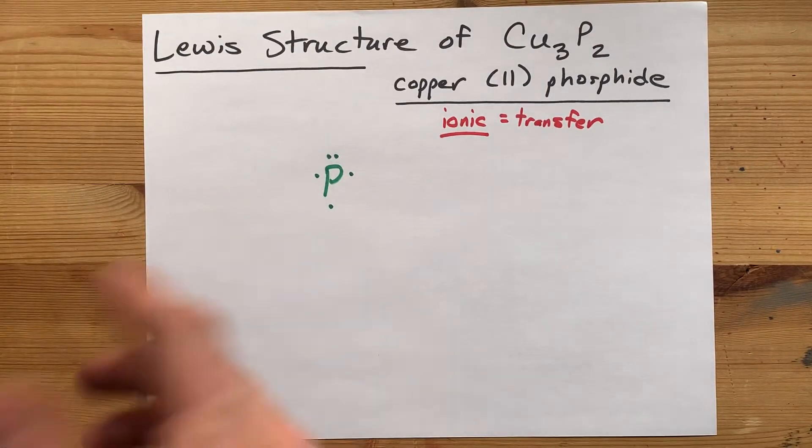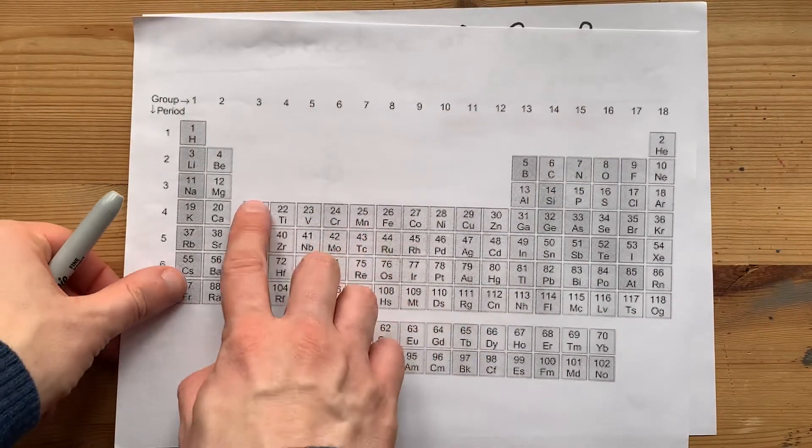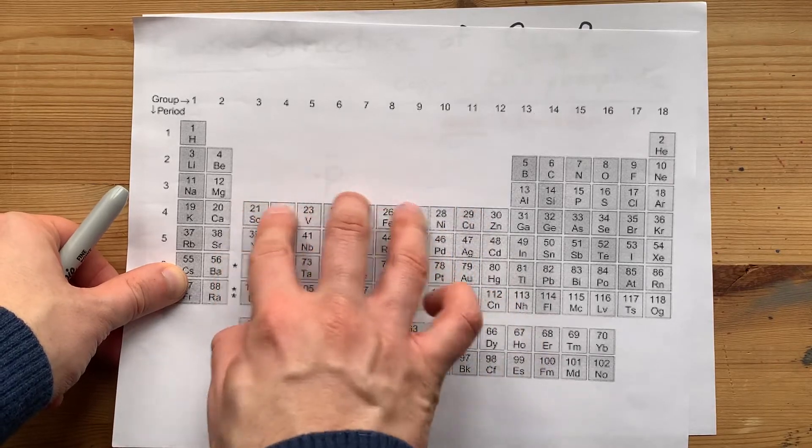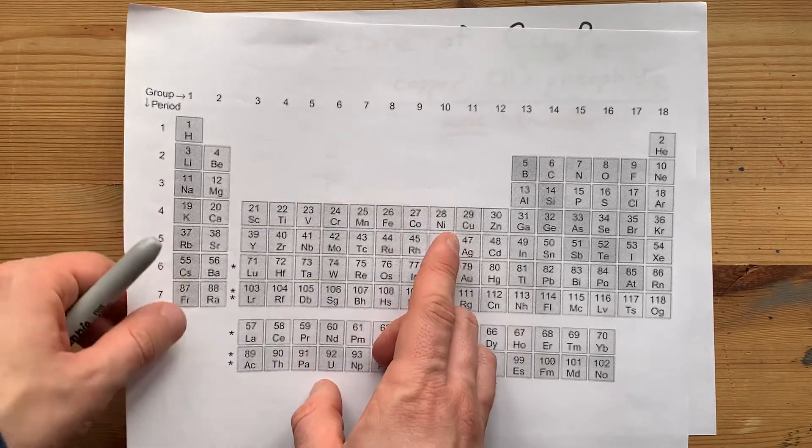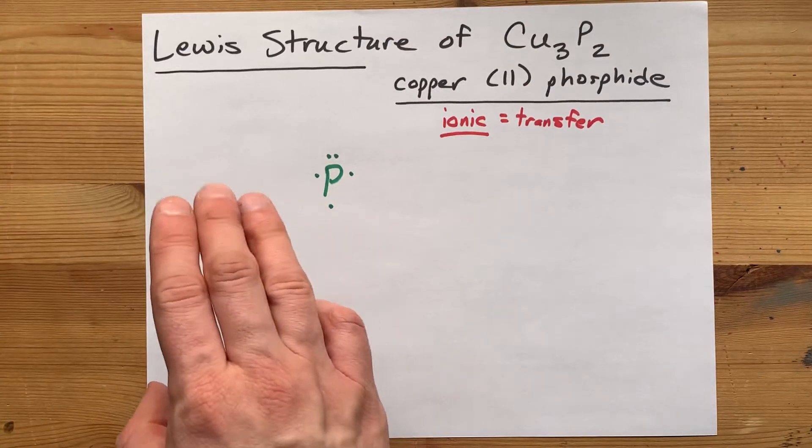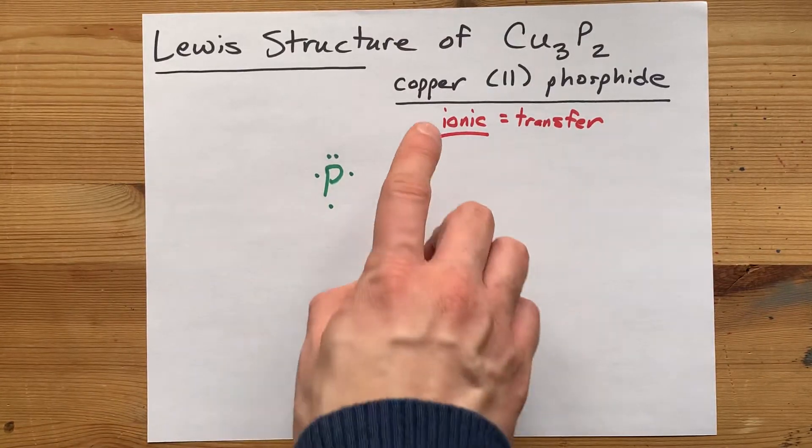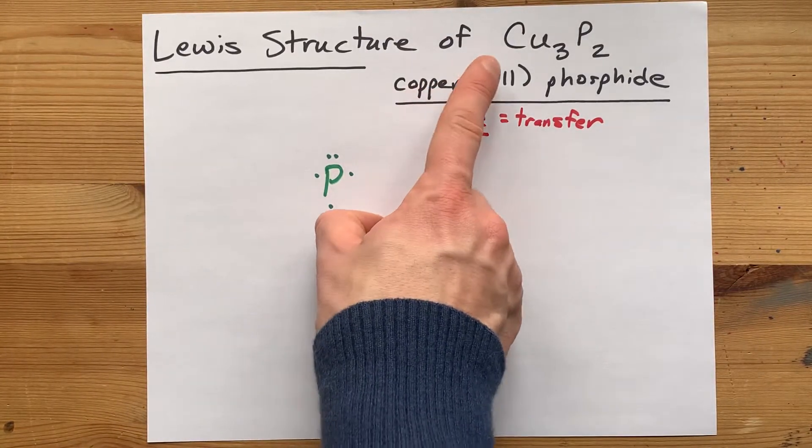Copper, on the other hand, doesn't have a shortcut like that. The transition metals, most of them can have more than one charge. And so to decide how many electrons you draw the copper with, you have to look at its charge.